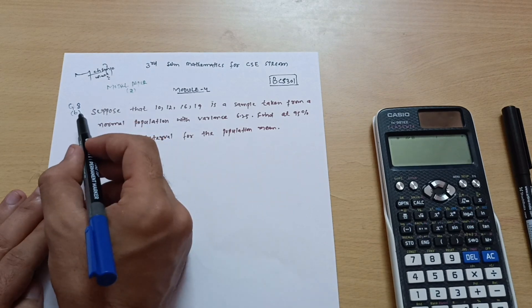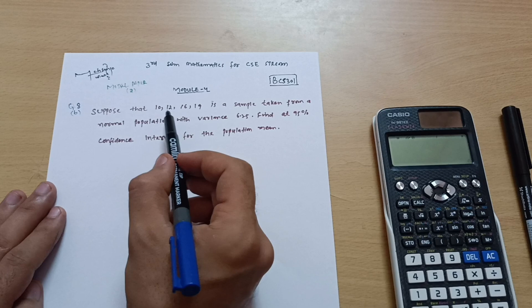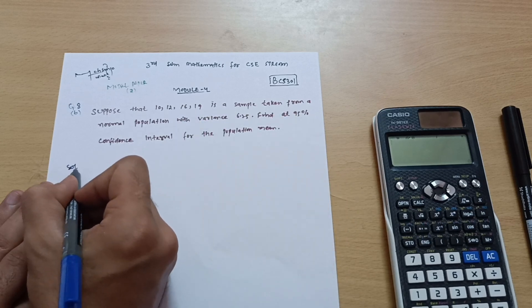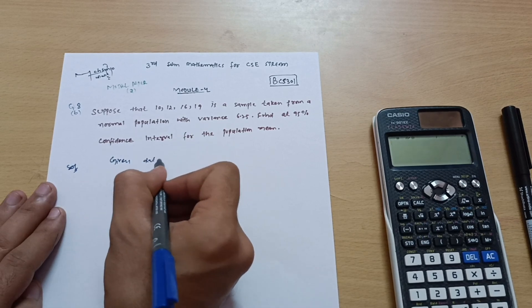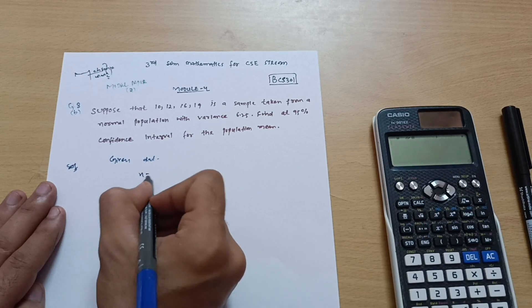This is your question number 8b. Suppose that 10, 12, 16, 19 is a sample taken from a normal population. So what is given? First of all, write down the given data. That is your sample size: 1, 2, 3, 4. These are the four samples, so n is equal to 4.